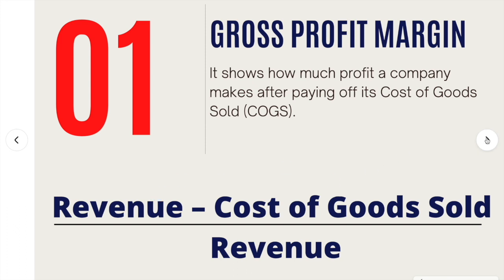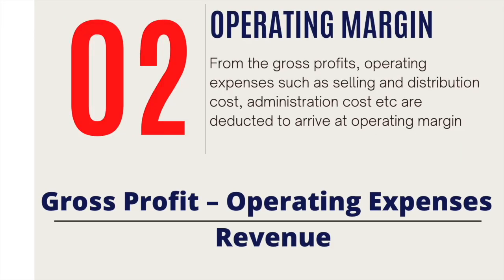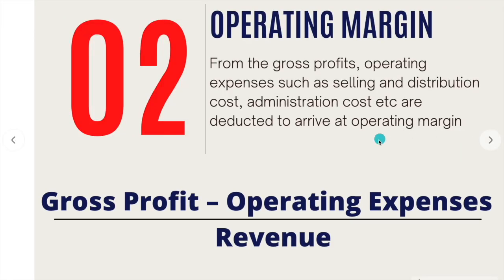Now let's go to the operating margin ratio. From the gross profit, operating expenses such as selling and distribution costs and administrative costs are deducted to arrive at operating profit. Operating profit divided by sales, multiplied by 100, gives the operating margin ratio.